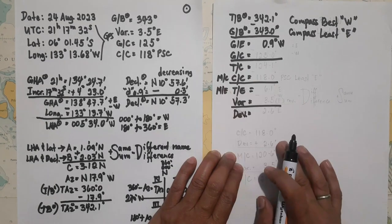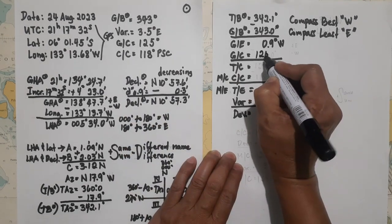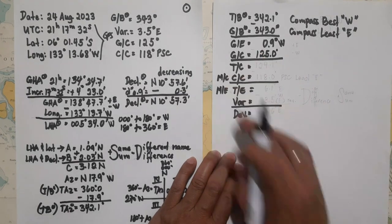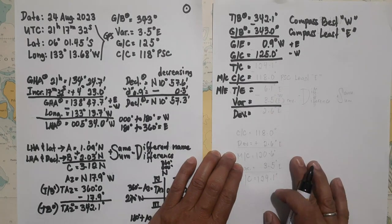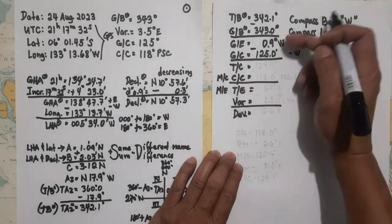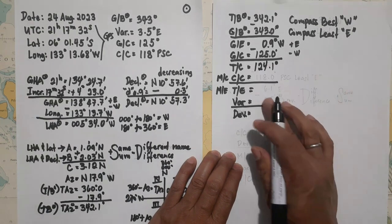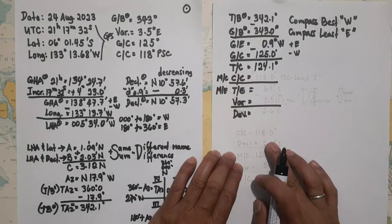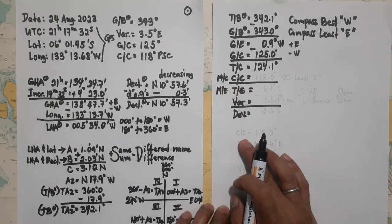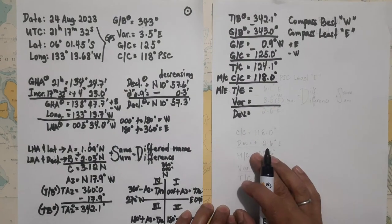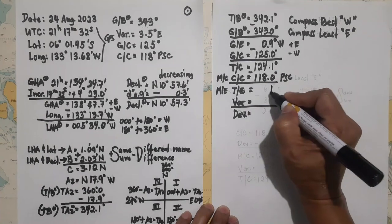Next, we apply the gyro course to find the true course. The gyro course at the time of observation is 125 degrees. Since the gyro error is west, we subtract: 125.0 minus 0.9 equals 124.1 degrees. This is now your true course. Then apply the magnetic course or compass course — per ship's compass — which is 118 degrees. Subtract the lesser from greater: 124.1 minus 118 equals 6.1 degrees.